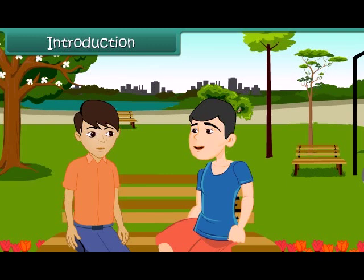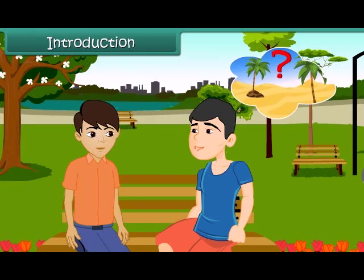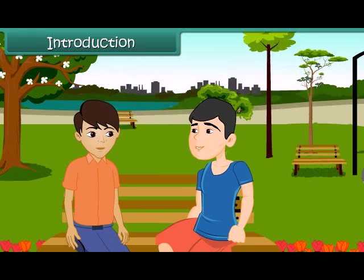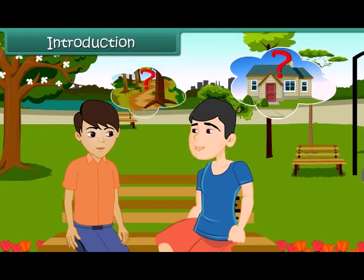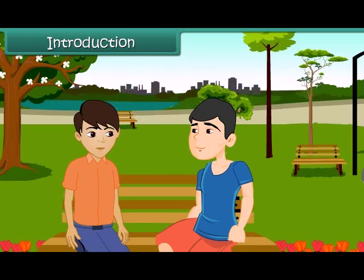Yesterday, my sister asked me a question and I could not answer it. What was the question? May I help you solve it? She asked what they are which give us fruits, give us wood, which can grow on land as well as in water, and which are found in homes as well as in forests. It's simple, dear. They are called plants.